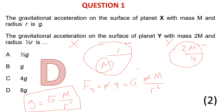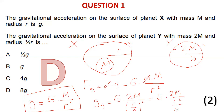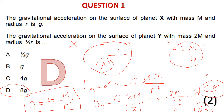Now substitute 2m for mass and r/2 for radius to get g for planet Y. G is constant. We get G times 2m over (r/2) squared, which is 2m over r²/4. Bringing 4 up gives 8Gm/r², which equals 8g. The answer is D: 8g. Question one done.